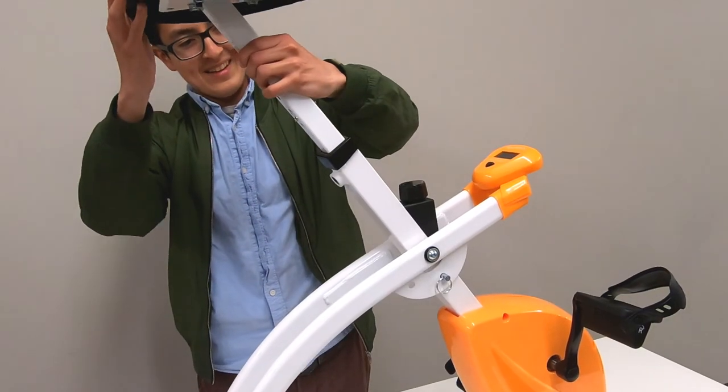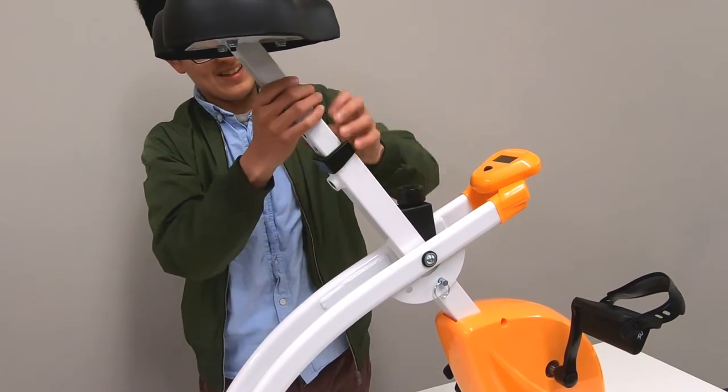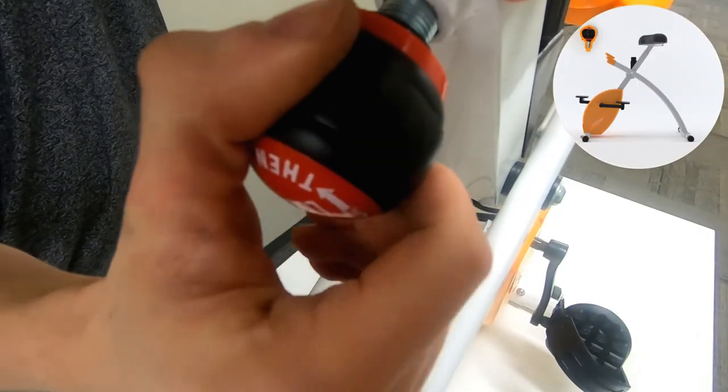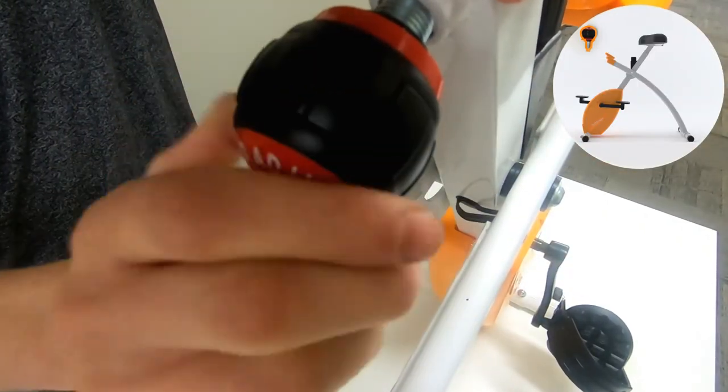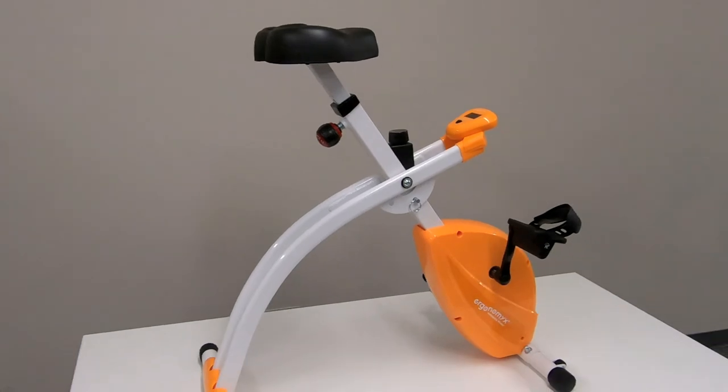Lastly, insert the seat support frame back into the bike frame, adjusting to the desired height, and fasten the threaded knob into the rear of the bike frame to secure the seat position.